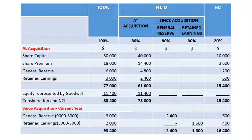We paid more than the 80% net asset value by $11,000 — this represents goodwill. Goodwill can arise because the company has a well-established name, a very good brand, or a strong workforce — these are the intangible things we may be paying for. Don't put underlines on the totals here because we still need to add since-acquisition amounts.